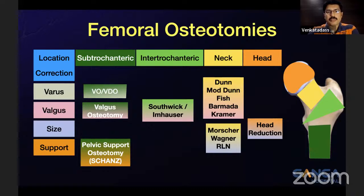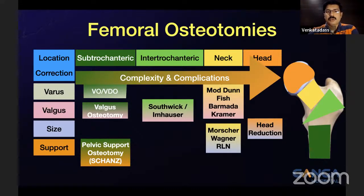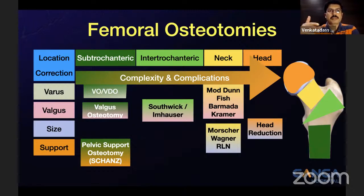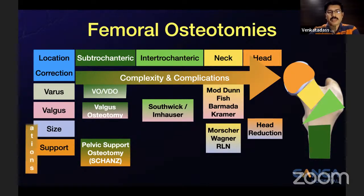As you move from the sub-trochanteric level proximally, the complexity and complication rate increases. The sub-trochanteric varus or valgus osteotomy is pretty simple and straightforward. As you move proximally to an inter-trochanteric or a neck and head osteotomy, the complexity increases — you need more planning and the rate of complications such as avascular necrosis or chondrolysis increases. Varus and valgus osteotomies are the most common procedures we do, whereas size-changing procedures like neck lengthening, head reduction, or pelvic support osteotomies are rarer.